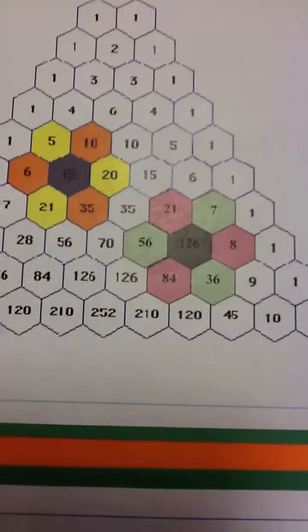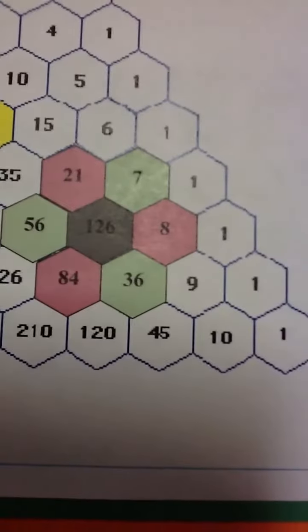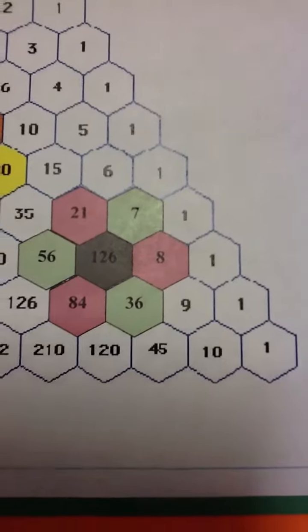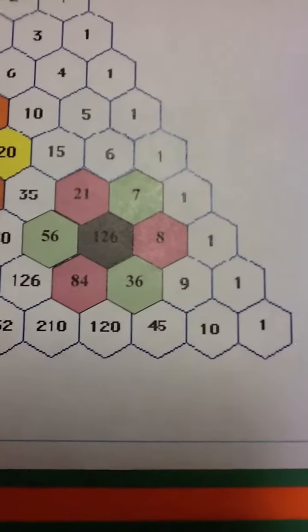For example, 7 times 36 times 56 equals 14,112. And then the other petals, 21 times 84 times 8 equals 14,112.